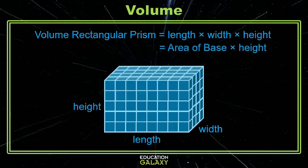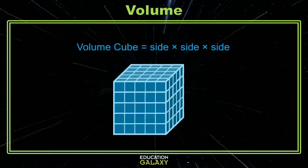Sometimes you'll see this written as area of base times height, which again we know area is just length times width. For cubes, since all of the side lengths are the same, we can just multiply that value three times. Let's try an example.